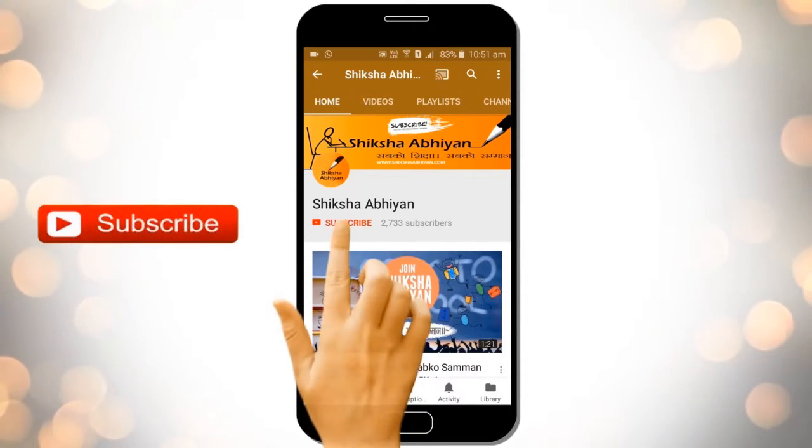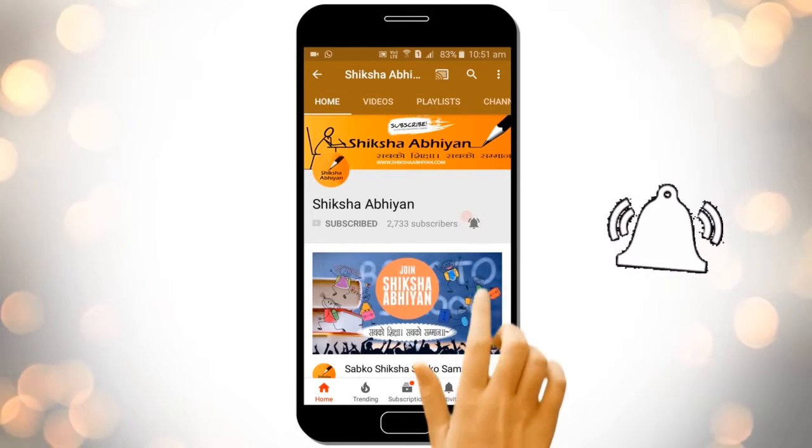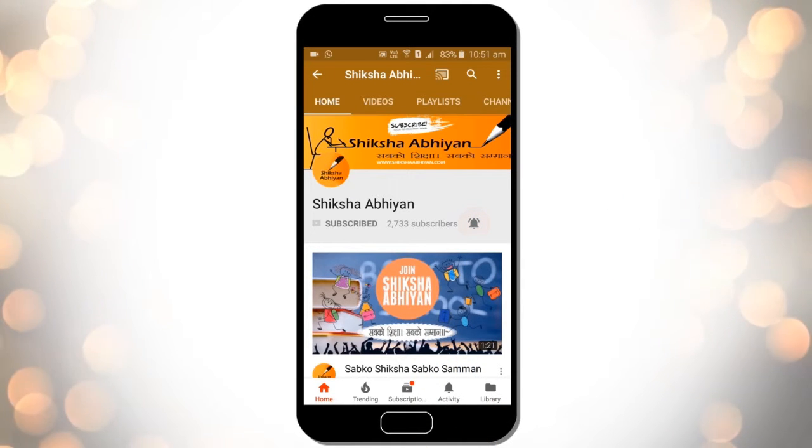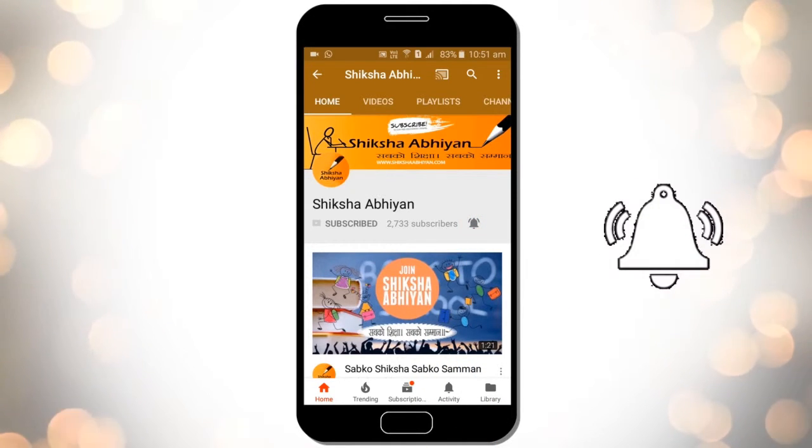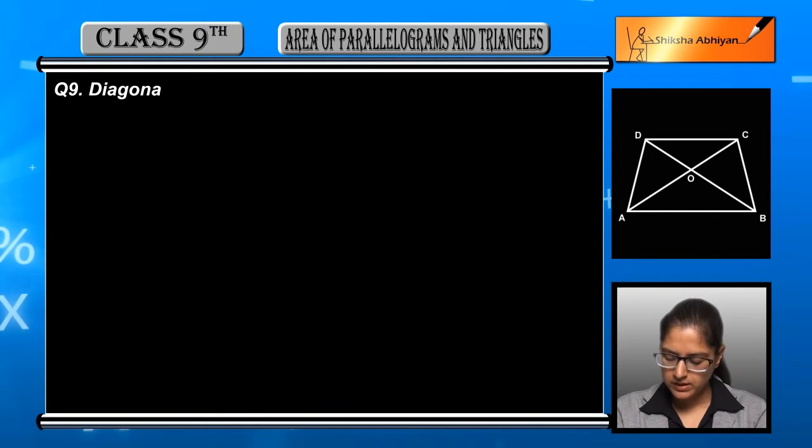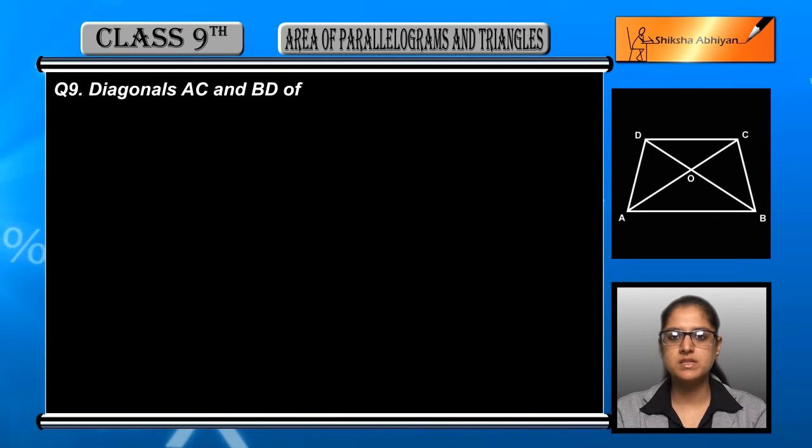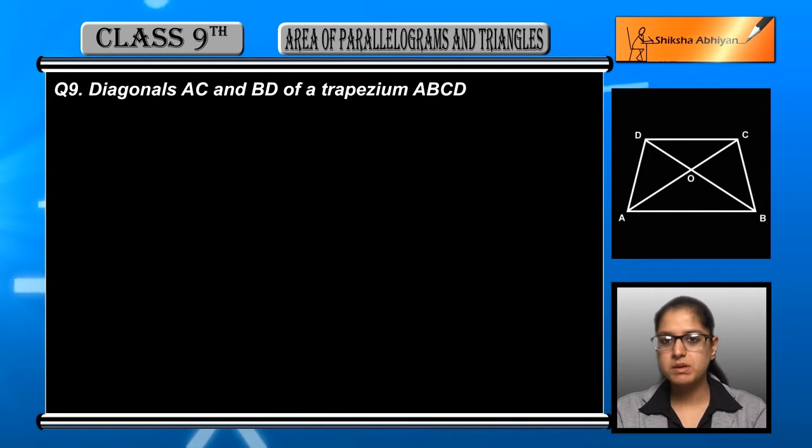Subscribe to our channel by clicking the subscribe button, click the bell button and enjoy the latest uploads from our channel. Question number 9: Diagonals AC and BD of a trapezium ABCD with AB parallel to DC intersect each other at O.